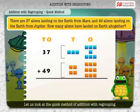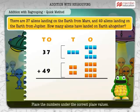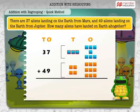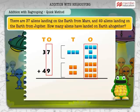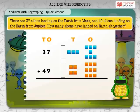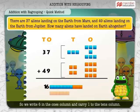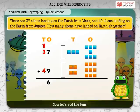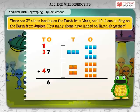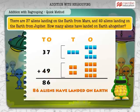Let us look at the quick method of addition with regrouping. Place the numbers under the correct place values. 37 has 3 tens and 7 ones, and 49 has 4 tens and 9 ones. Add the ones: 7 plus 9 is equal to 16. But we have to regroup 16 as 1 ten and 6 ones. So we write 6 in the ones column and carry 1 to the tens column. Now, let us add the tens: 1 plus 3 plus 4 is equal to 8. 37 plus 49 is equal to 86.